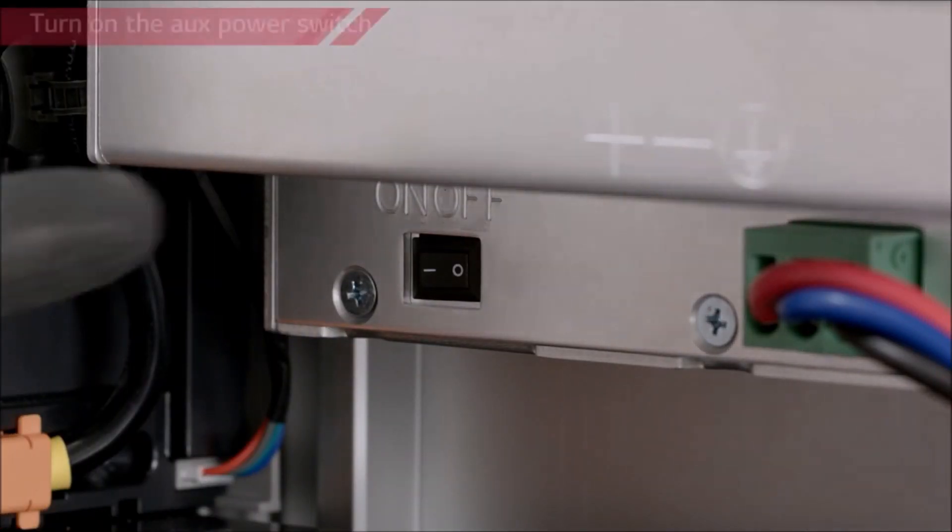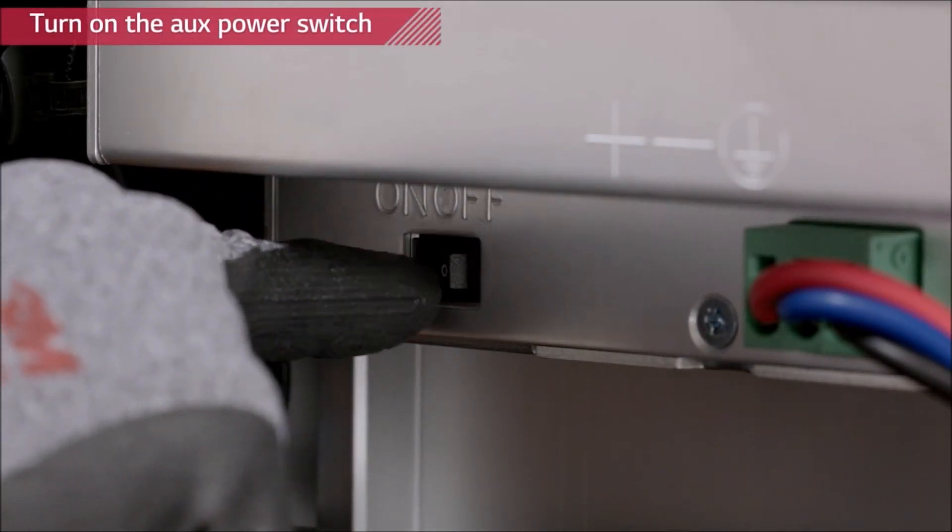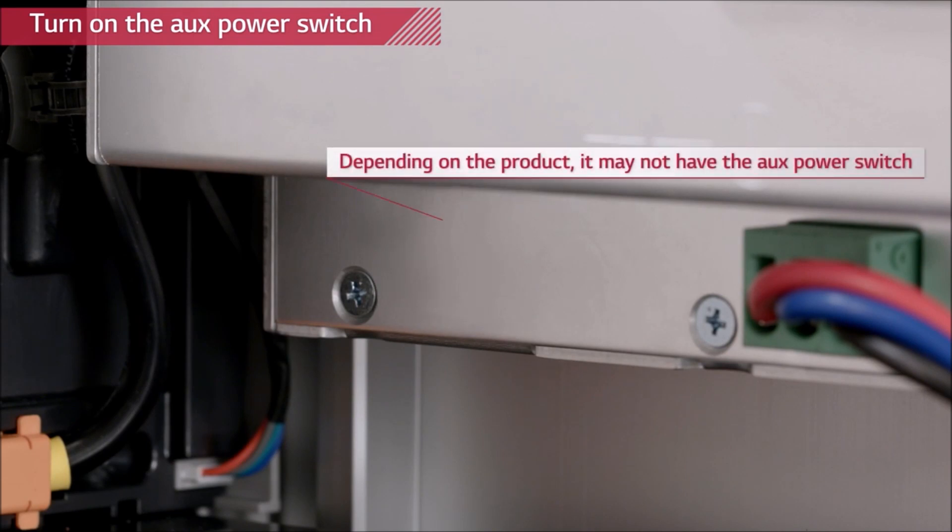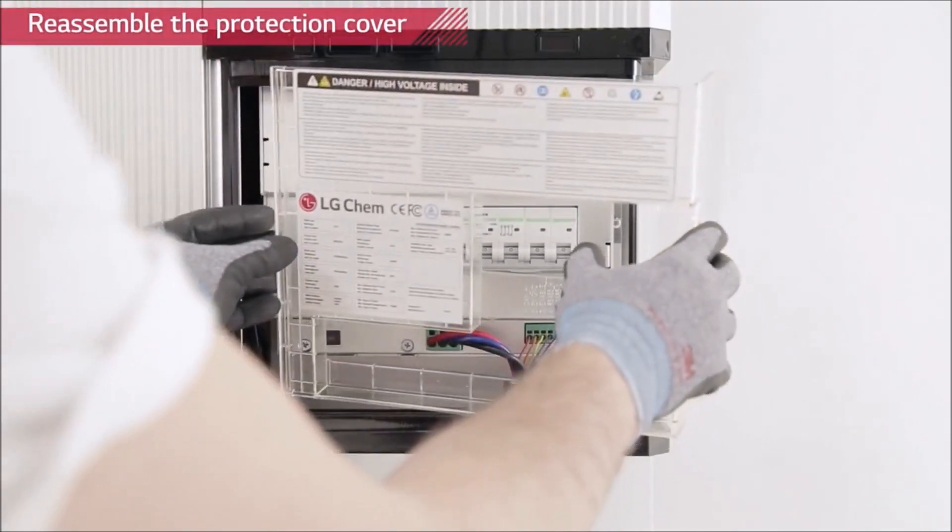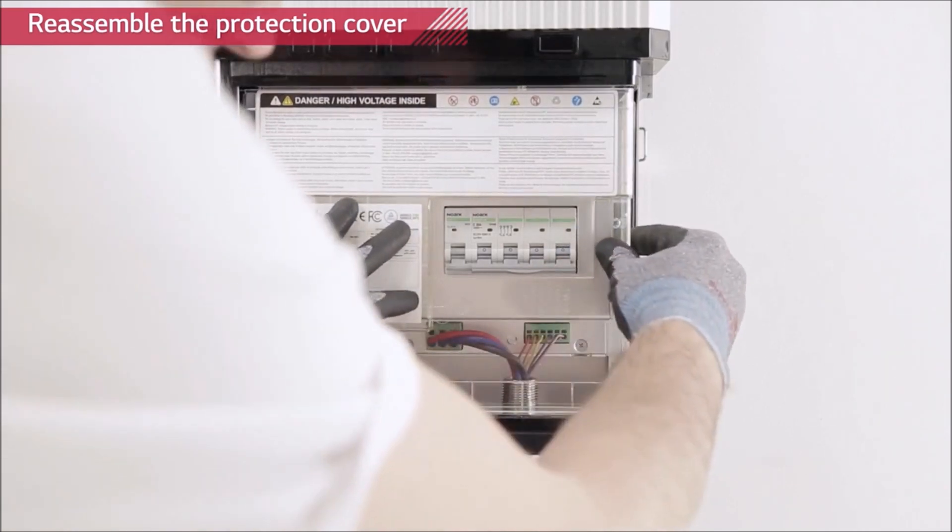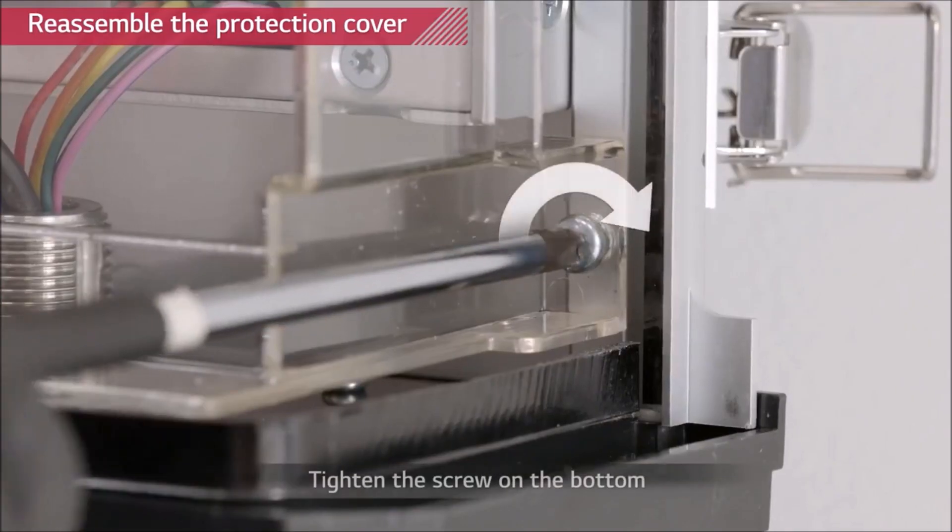Turn on the auxiliary power switch and reattach the plastic protection cover. If your battery pack doesn't have the auxiliary power switch, just reattach the plastic protection cover. Tighten the screw on the bottom right side of the cover.